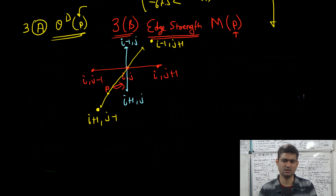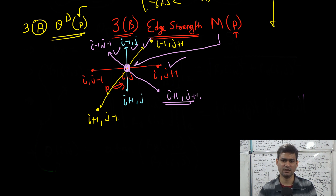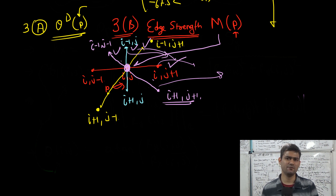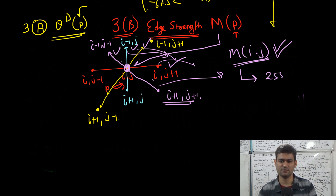In the 135° direction, we compare to (i-1, j-1) and (i+1, j+1). So in each of the four directions, we compare the edge strength — the magnitude of the gradient at pixel (i, j) — to the neighboring pixels in that direction. If in any of the directions the edge strength at (i, j) is larger than both neighbors, then this point passes the non-maximal suppression test and is set to 1 (or 255 in a binary output), otherwise it retains its original value.